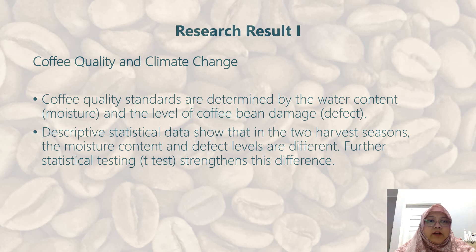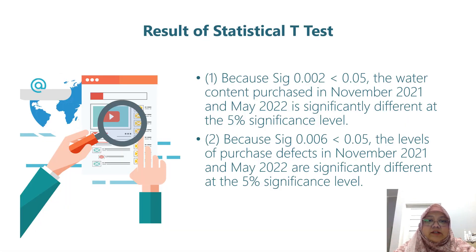Research result 1: Coffee quality and climate change. Coffee quality standards are determined by the water content, moisture, and the level of coffee bean damage or defects. Descriptive statistical data shows that in the two harvest seasons, the moisture content and defect levels are different, and further statistical t-test testing strengthens the differences. Because p = 0.002, less than 0.05, the water contents purchased in November 2021 and May 2022 are significantly different at the 5% significance level. Because p = 0.006, less than 0.05, the defect levels in November 2021 and May 2022 are also significantly different at the 5% significance level.